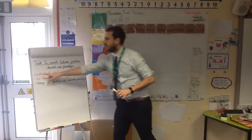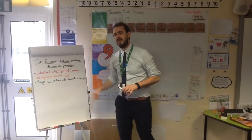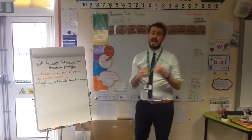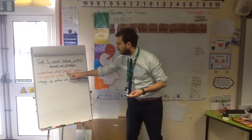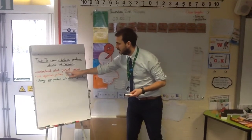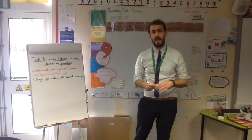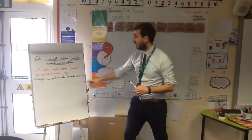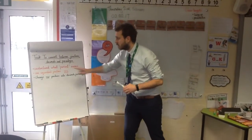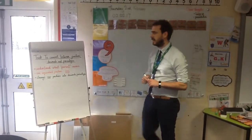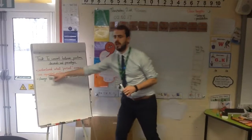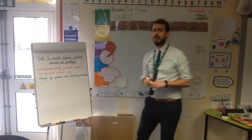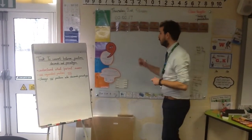The first thing we need to really understand is this word: percent. Percent literally means out of 100. If we think about the part of the word 'cent', we think about a century being 100 years, or a centurion having 100 men in its army. So 'per' means out of, and 'cent' means 100. If we can change our fractions so they're always out of 100, it's going to make it really easy for us.